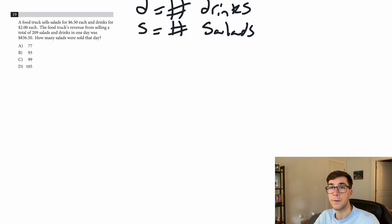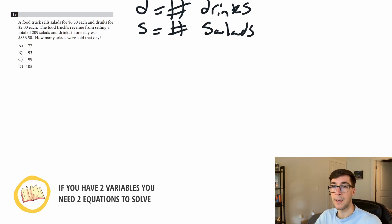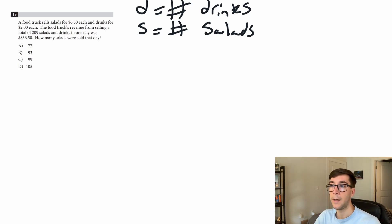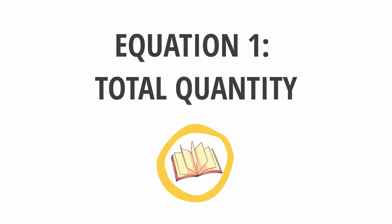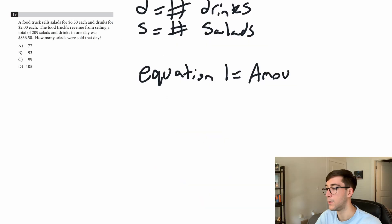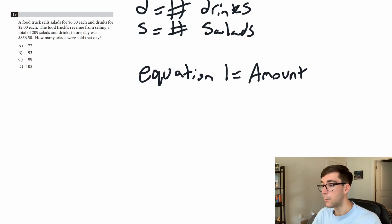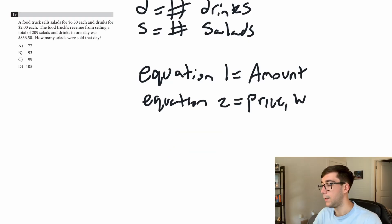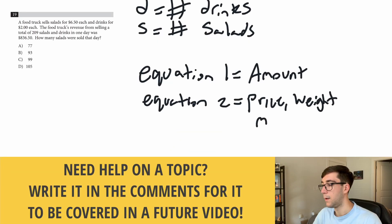Now we have two variables. A rule of thumb with equations is that you need the same number of equations as variables to find those variables. If you have one variable you need one equation; if you have two like in this problem, you need two equations. There are two main types: equation one is the amount or quantity equation, and the second equation will be some kind of measurement — it could be price, weight, or any measurement.